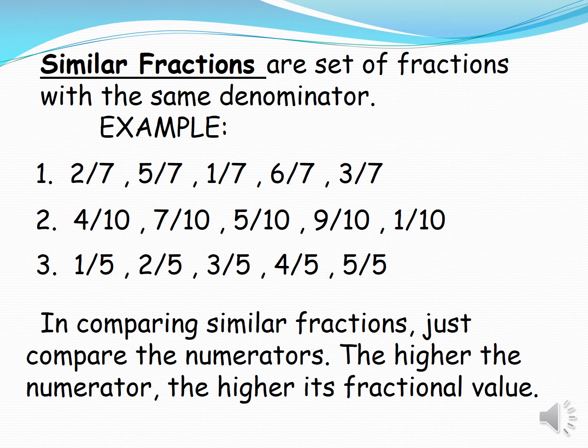Similar fractions are a set of fractions with the same denominator. Example number one: two sevenths, five sevenths, one seventh, six sevenths, three sevenths. Number two: four tenths, seven tenths, five tenths, nine tenths, one tenth. Number three: one fifth, two fifths, three fifths, four fifths, and five fifths. These are sets of fractions with the same denominator.